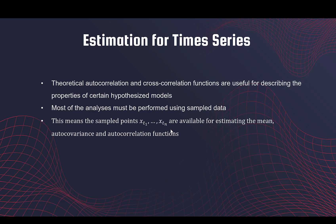In classical statistics, when we want to estimate the mean of a random variable, we collect a data set with a sample size of n where data are typically identically and independently distributed. The average of the data is then the estimate of the population mean. For example, to estimate the mean height of all students at a university, we collect a sample of say size 100 and estimate the mean height of the entire population using the average of that data set.